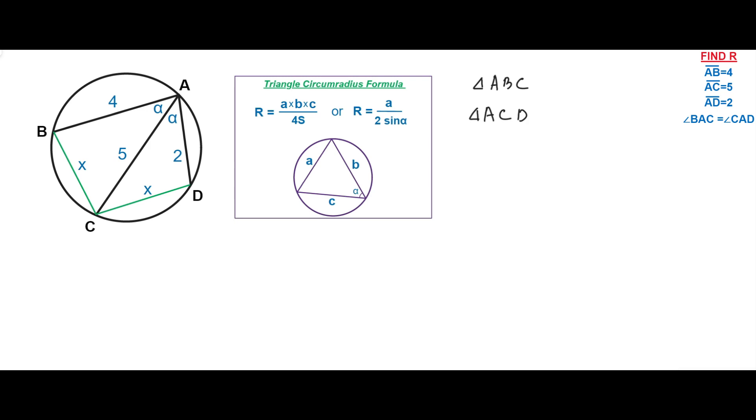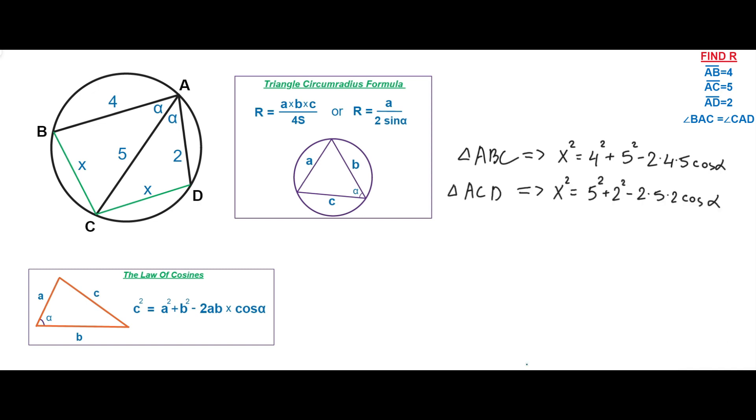Here's the law of cosines. The law of cosines is used for determining the side of the triangle by using the other two sides and their common angle. For triangle ABC we can write the following. For triangle ACD we can write the following. And this is a system we need to solve for X and cosine alpha.